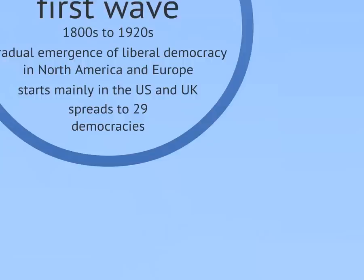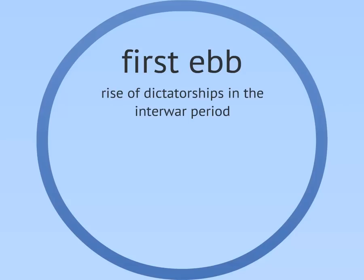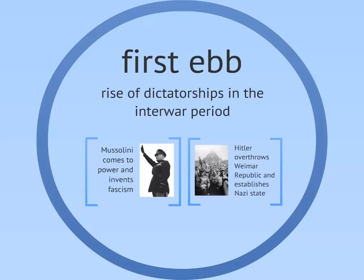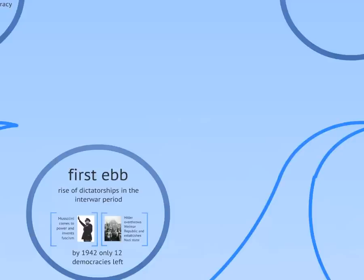The first wave was followed by the first reverse wave, or ebb. This occurred in the period between the First and Second World Wars, a time in which dictators overthrew a number of democracies. This was the period of growing totalitarianism, with Mussolini pioneering fascism in Italy and Hitler rising to power to establish the Nazi state in Germany. The combination of the Great Depression and the invasions of these Axis powers toppled a number of democracies, so that in the midst of World War II, there were only a handful left.